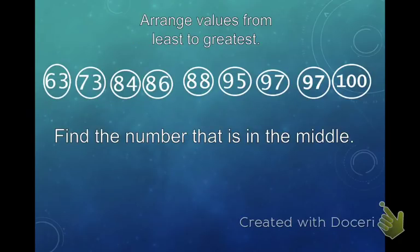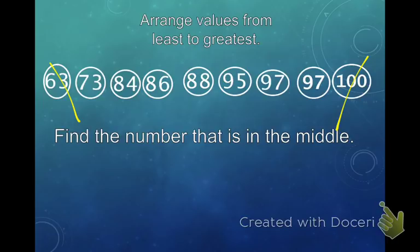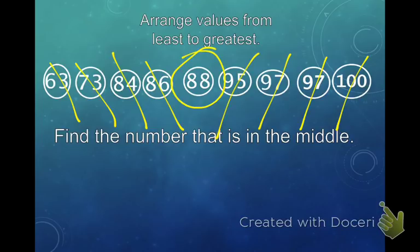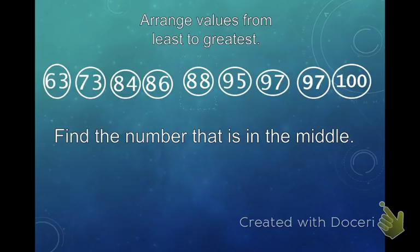Let's look at those test scores again. This time I put them in order from least to greatest. Remember, the first step when trying to find the median — or the mode, or even the range — is to put them from least to greatest. Now that they're in order, we're going to find the number in the middle. You start by crossing off the first one on the left side and the first one on the right side, and keep doing that. There's only one left, and that is the middle number, which is 88. So the median is 88.